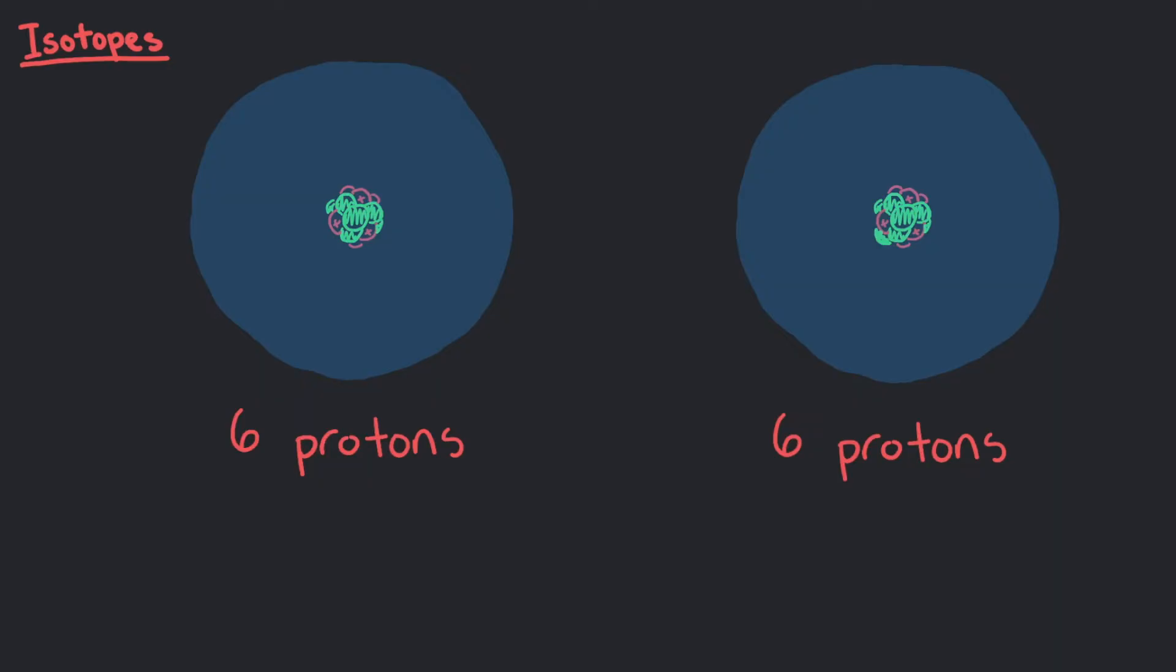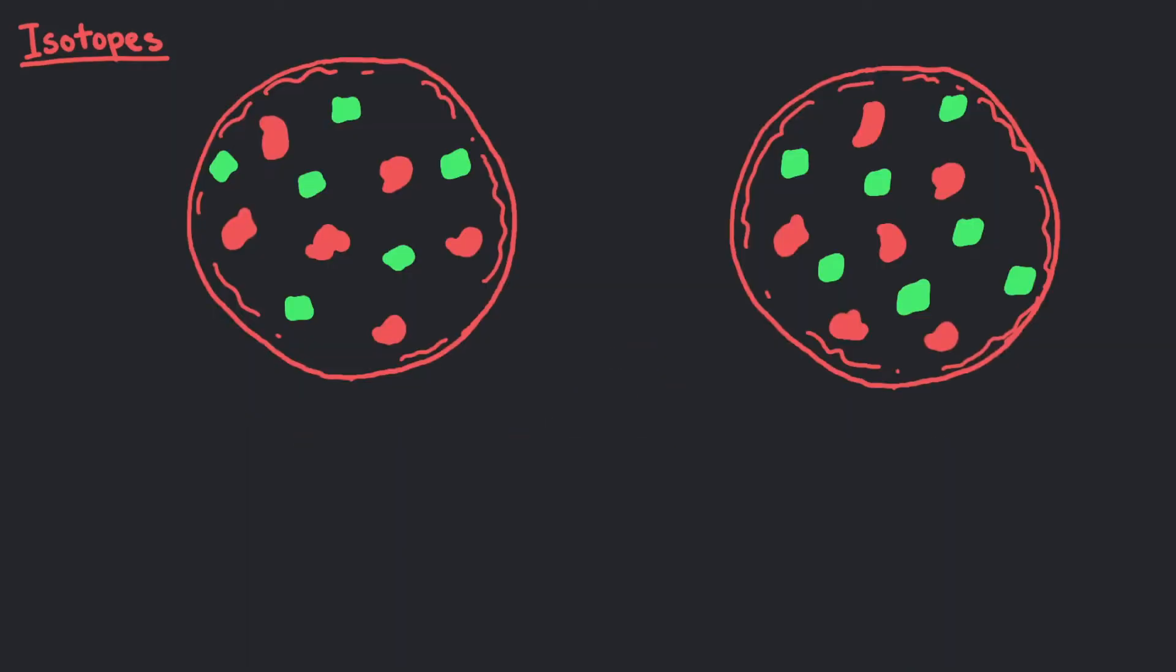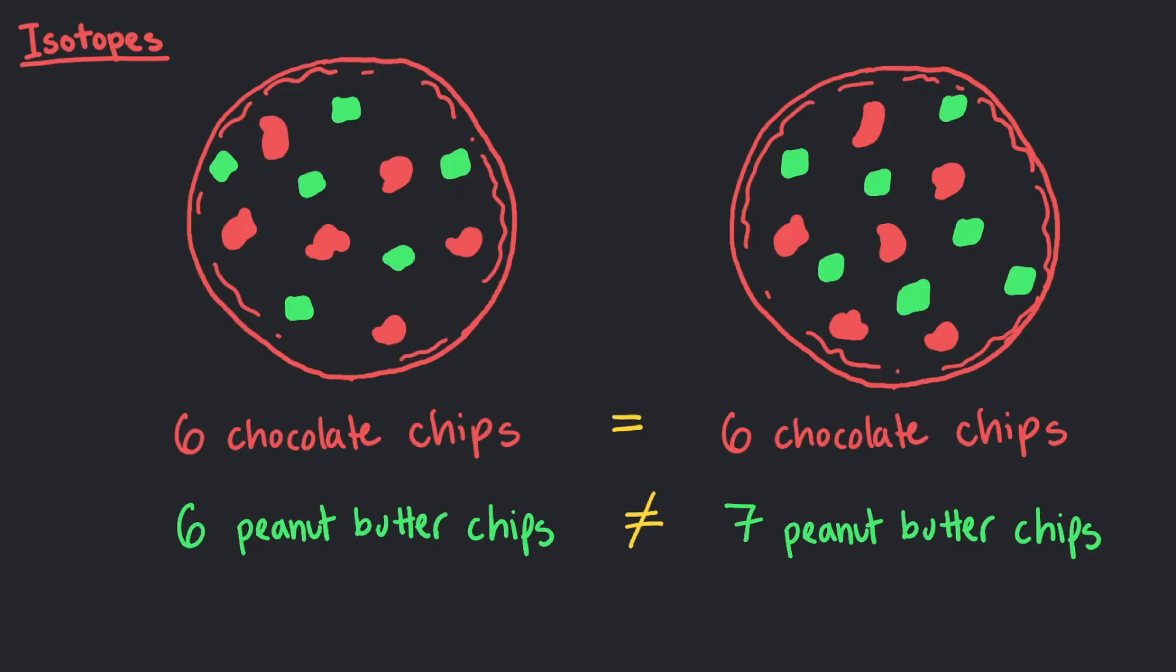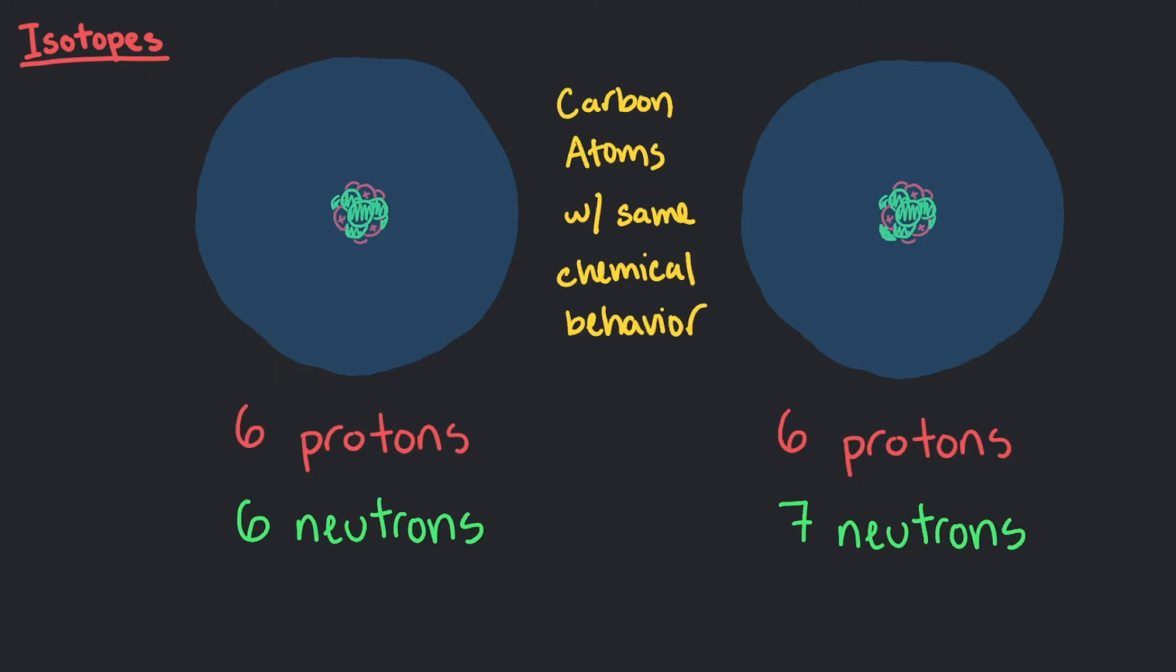We have two different types of carbon, one with 6 neutrons and one with 7. These are isotopes of each other because they have the same atomic number but a different number of neutrons. Looking at these two carbon atoms is similar to looking at two chocolate chip cookies with the same toppings of chocolate and peanut butter chips. They both have the same number of chocolate chips but different in peanut butter chips. However, they are both still cookies, meaning in the end these are both still carbon atoms with the same chemical behavior.